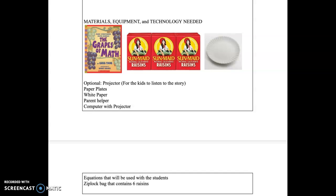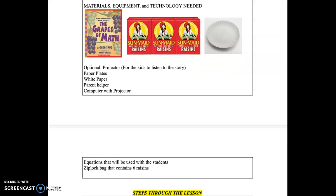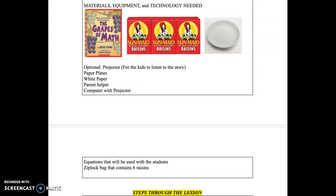Materials and equipment, materials and technology that will be needed: of course, it will be the book, The Grapes of Math. It would be the boxes of sun-made raisins, as well as paper plates, white paper, like just white paper, the ones from where you print. Parent helpers will be very useful. Also, computer with a projector, so you can project the equations that will be used with the students. The equations, a Ziploc bag that contains six raisins.